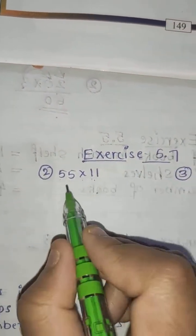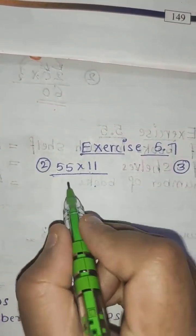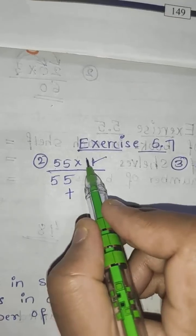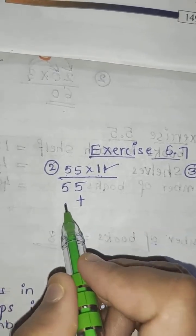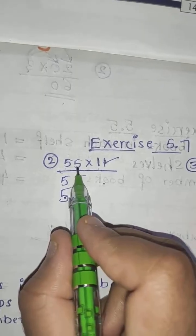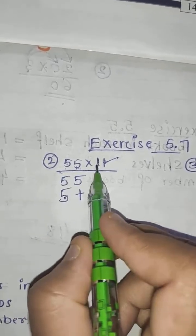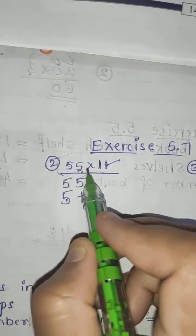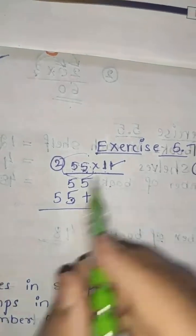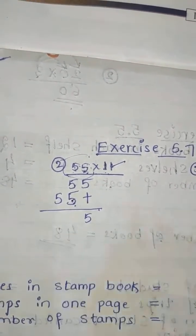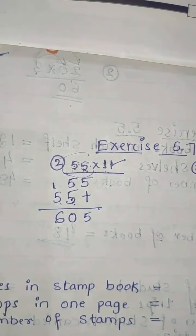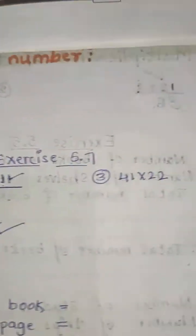55 into 11. First, 1 five is 5. Then, from the tens place: 1 five is 5 — write with a plus mark starting from the tens place. Adding: five is five, five plus five is 10 — so 0 here and 1 carries over. 1 plus 5 is 6. So the answer is 605.